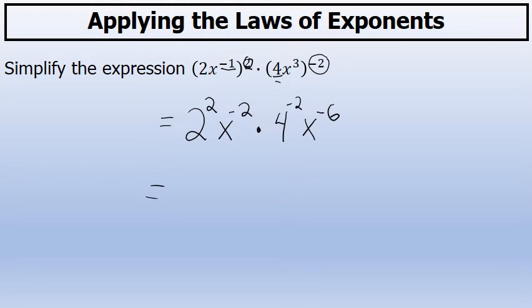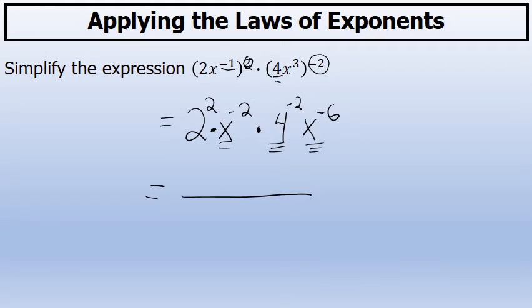The next thing I'm going to do is rewrite this without any negative exponents. When there are negative exponents and there's no fraction bar in the original problem, the factors that have a negative exponent will be moved to the bottom of a fraction. At this point I have 4 factors: 2 squared is the first, x to the negative 2 is the second, 4 to the negative 2 is the third, and x to the negative 6th is the fourth. All factors with a negative exponent move to the denominator; the 2 squared stays in the numerator.